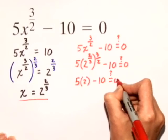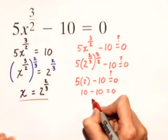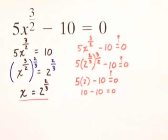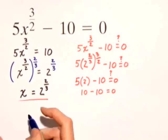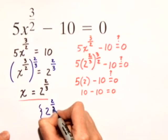Is that equal to 0? Sure. 10 minus 10 is equal to 0. So that was true. Therefore, I can say that my solution set is the set containing 2 to the 2 thirds power.